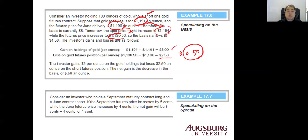You can also speculate on the spread. Consider an investor who holds a September maturity contract long and a June contract short. The spread is the difference between futures contracts on the same commodity but with different maturities. If the September futures price increases by five cents while the June futures price increases by four cents, you gain five cents on the long position and lose four cents on the short position, for a net gain of one cent. You can bet on both the basis and the spread.